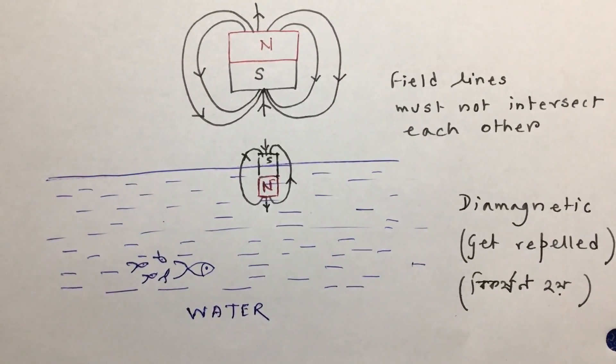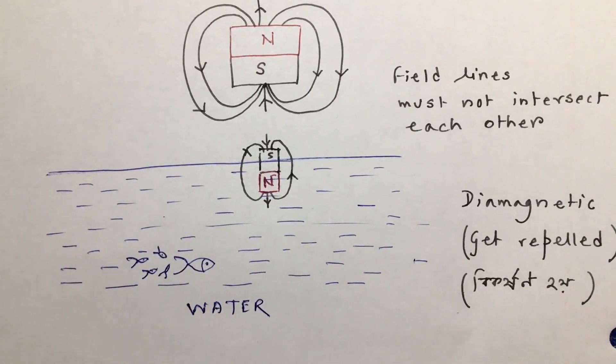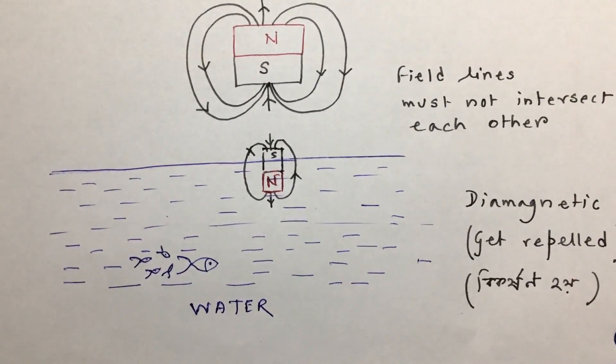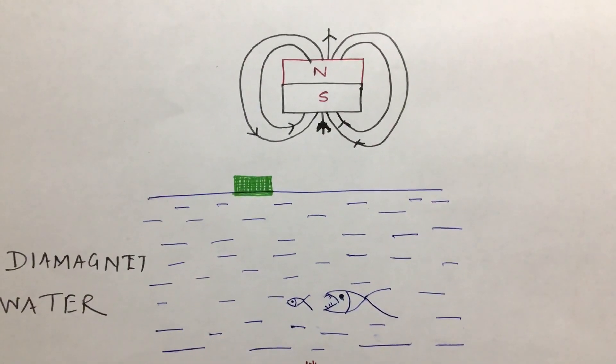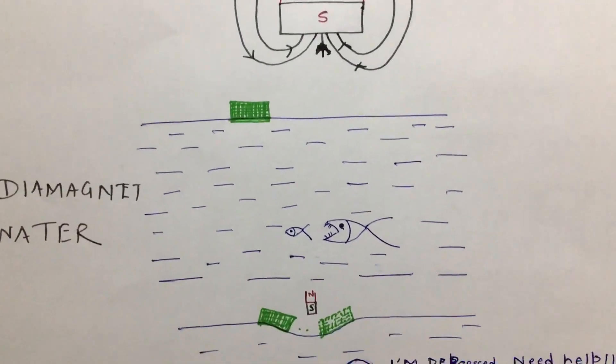The south pole of the approaching magnet will develop a south pole in the water so that they get repelled. There will be repulsion between the approaching magnet and the diamagnetic water.